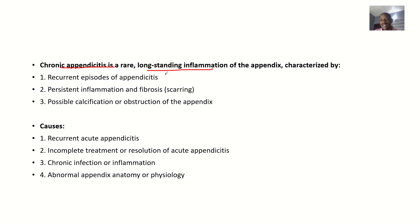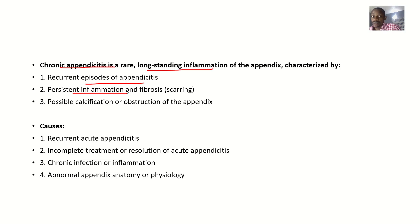What are the characteristics? There are recurrent episodes of appendicitis — it could be coming and going repeatedly. It could be that there's persistent inflammation and fibrosis. It could also involve possible calcification or obstruction of the appendix.